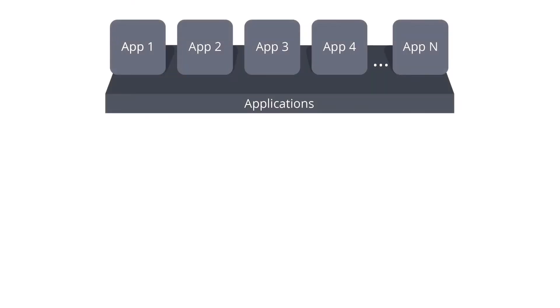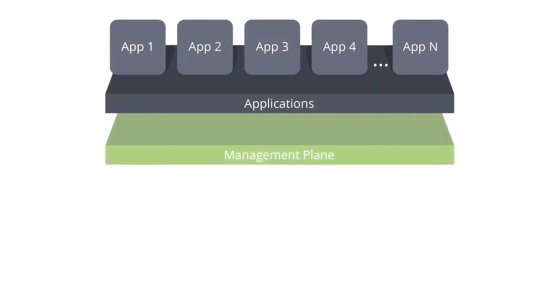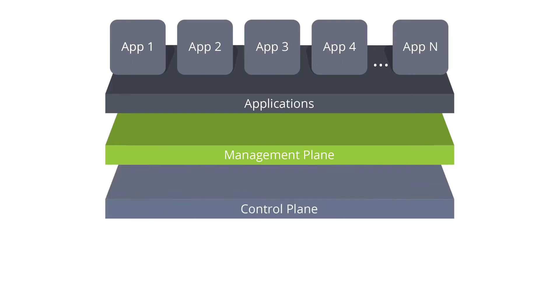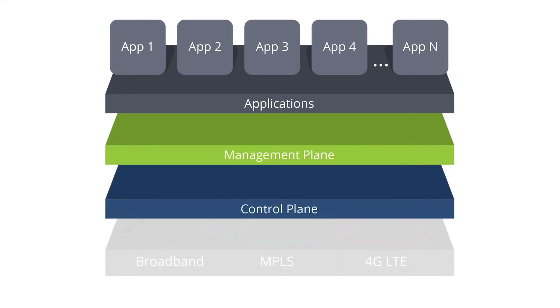SD-WAN architecture decouples, or logically separates, the applications and the control and management functions from the WAN transport services like MPLS, broadband internet, LTE, and even satellite or microwave. In SDN-speak, this is referred to as the separation of the controller management plane from the data forwarding plane.